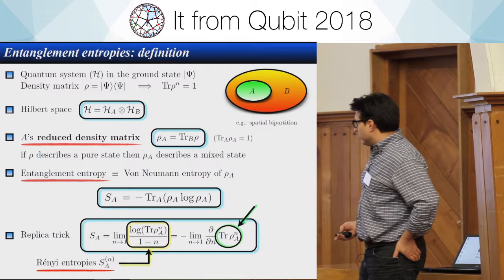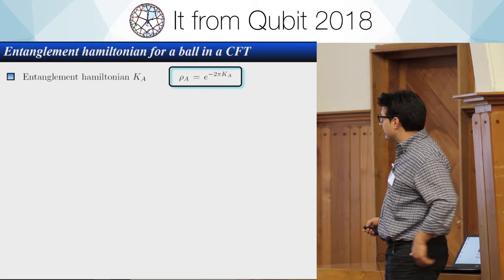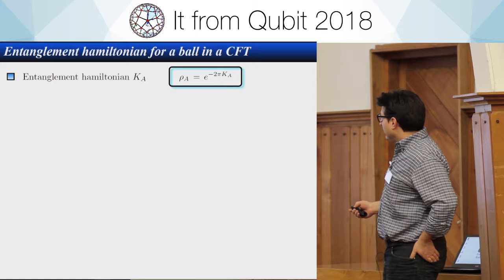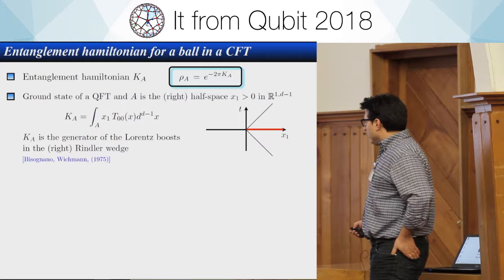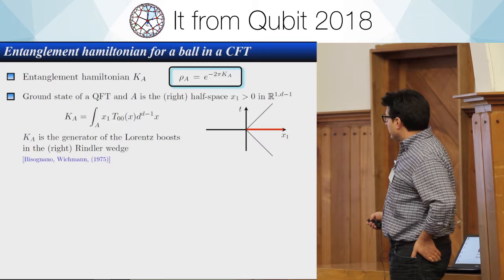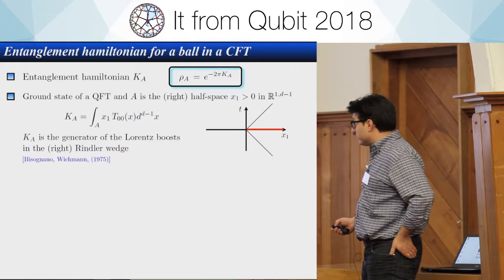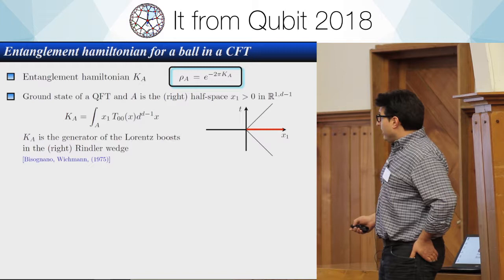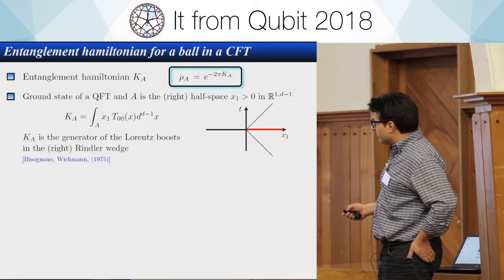I will focus mainly on the entanglement Hamiltonian, which is another way to express the reduced density matrix of a subsystem. Since this operator can be written as e^{-K}, this K is called the entanglement Hamiltonian. The seminal result is due to Bisognano and Wichmann, who found that if you take a Lorentz invariant system — not necessarily critical — and take half of the system in a space direction, then the entanglement Hamiltonian of half space can be written as an integral of x_1 times T_{00}, the zero-zero component of the stress tensor in Lorentzian signature.